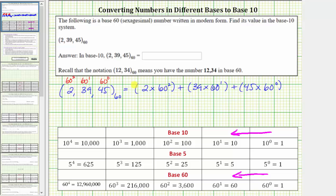Now let's simplify the exponents. We have 2 times 60^2 equals 3,600, plus 39 times 60^1 equals 60, plus 45 times 60^0 equals 1. So 2 times 3,600 is 7,200, plus 39 times 60 equals 2,340, plus 45 times 1 is 45.